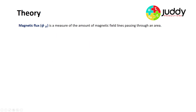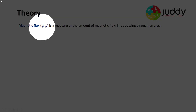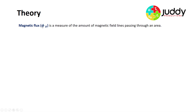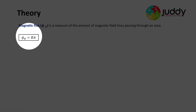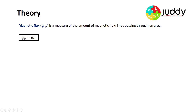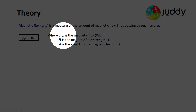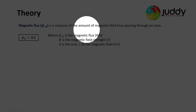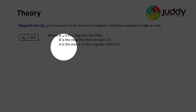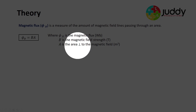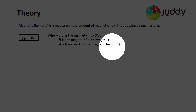Magnetic flux is given the symbol Φ (phi) with a subscript B, because there are other forms of flux measured in physics as well. It is the measure of the amount of magnetic field lines passing through an area — quite often the loop or coil of metal. Our equation is: magnetic flux Φ = B × A, where Φ is measured in weber, B is the magnetic field strength in tesla, and A is the area perpendicular to the magnetic field in meters squared.